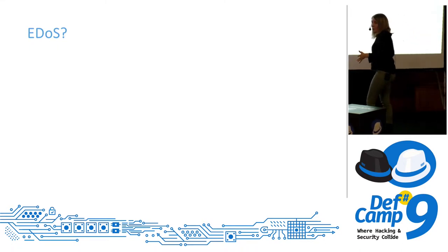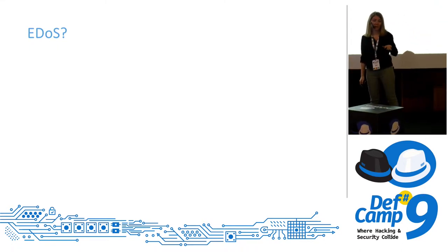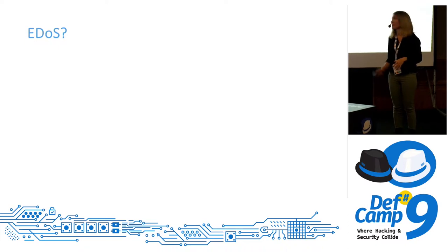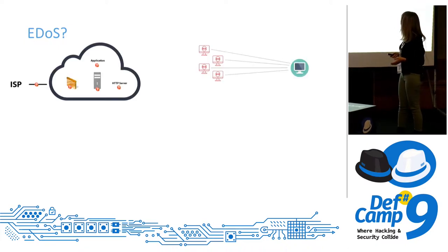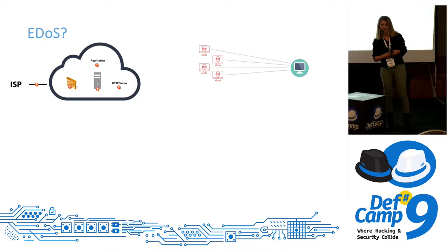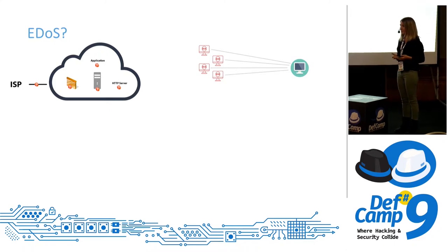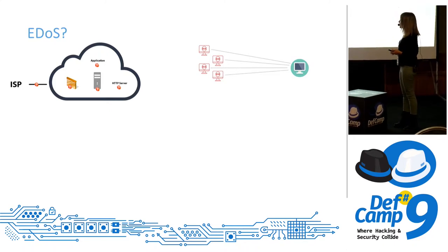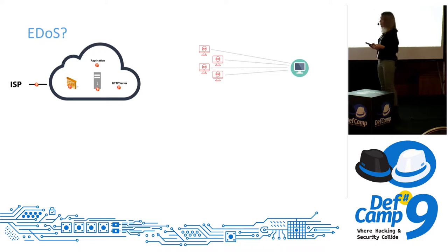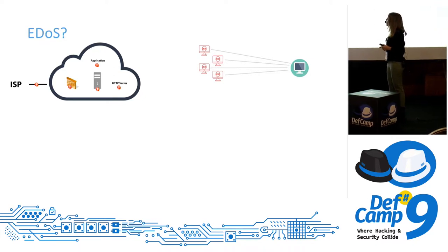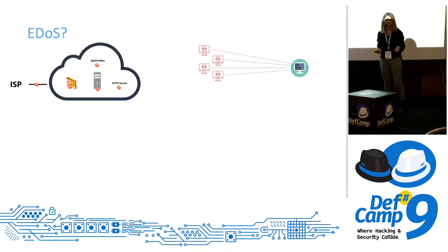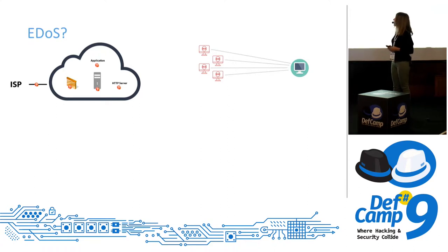All of you have heard of distributed denial of service attacks. But what is an economical denial of service? First, let's go a little bit on what a DDoS is. Practically, it's more than one computer attacking the same victim with the purpose of making their resources unavailable — either the internet bandwidth, the victim's hardware resources, or software tools like the web server or even their application.